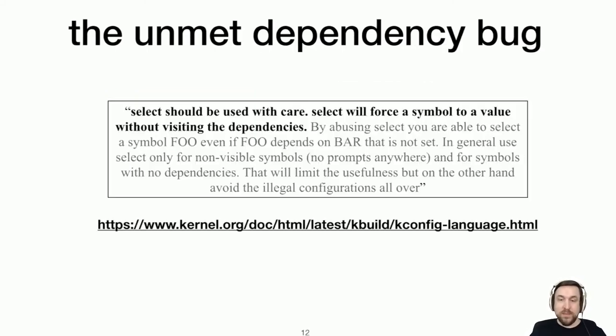This unmet dependency bug actually comes from the kconfig manual itself. It says that this select construct should be used with care. Select will force a symbol to a value without visiting the dependencies. What that means is that an incorrectly written specification can actually cause configuration dependencies to be circumvented, potentially leading to a broken kernel build. And this is the bug that we challenged our analysis techniques to try to find automatically in kconfig specifications.